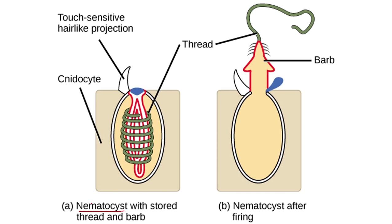The nematocysts work in a manner similar to a sweater sleeve turned inside out — there is a thread-like structure inside the nematocyst. Whenever the prey attaches to it, this thread comes out in the outward direction and releases poison, paralyzing or sometimes killing the prey.